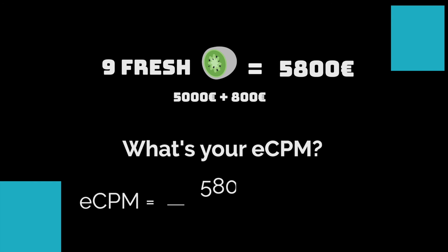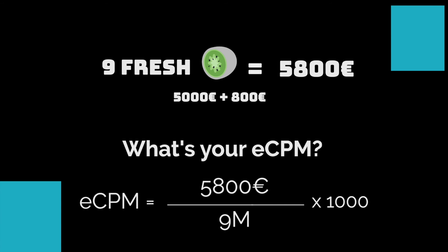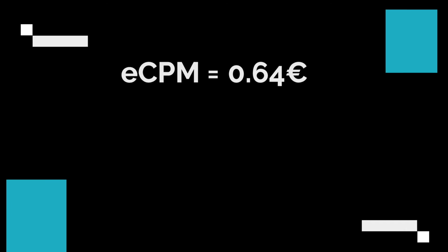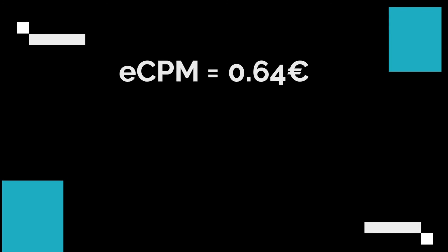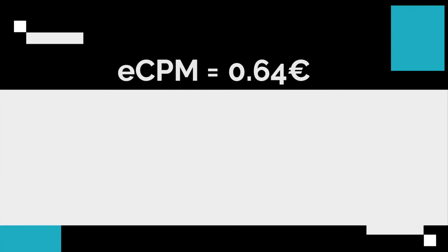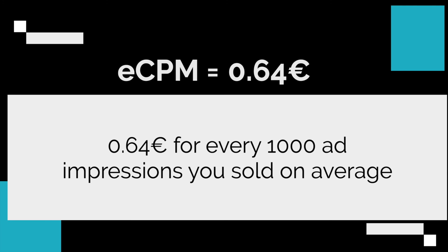What's your eCPM? You divide your total ad revenue of 5,800 euros by the ad impressions you sold, which was 9 million. This gives you your eCPM of 0.64 euros. You earned 0.64 euros for every thousand ad impressions you sold on average.